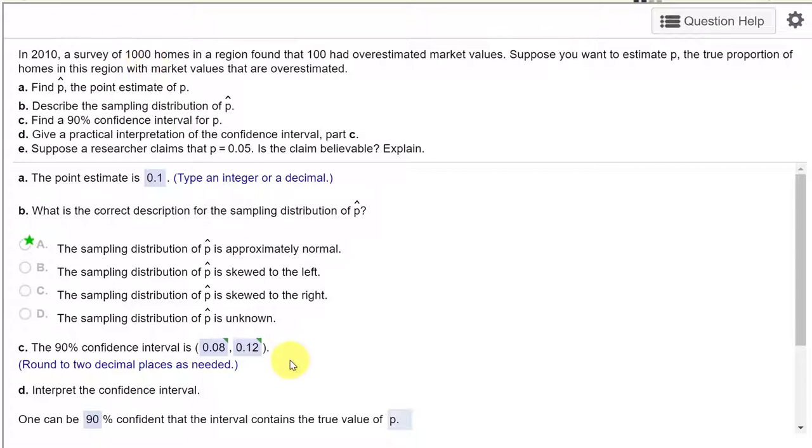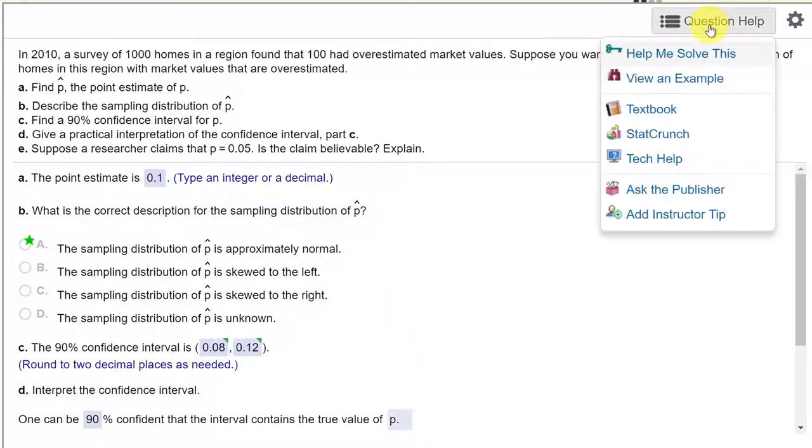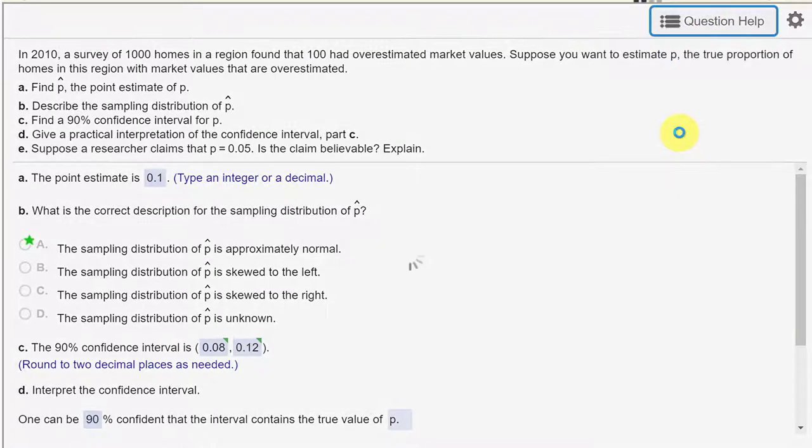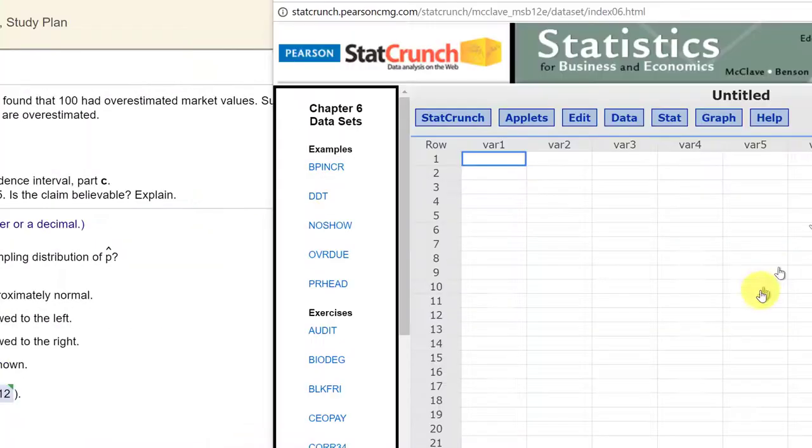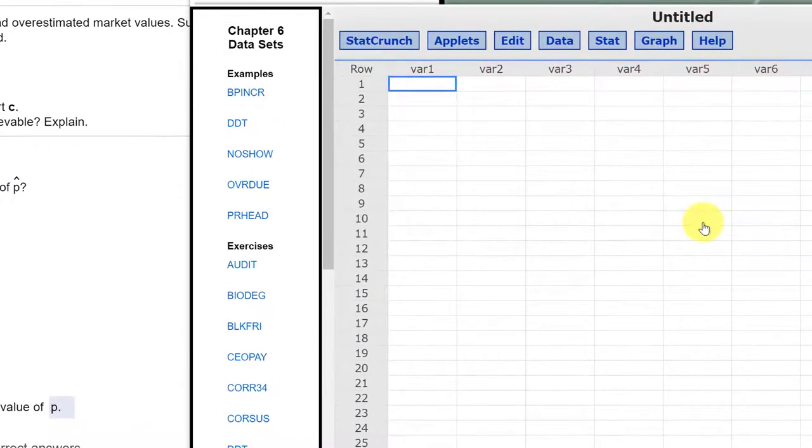We're going to use the Z formula for getting the confidence interval but we're going to do it using StatCrunch. So the first thing we want to do is click over here on question help and then open up StatCrunch. I have StatCrunch open and I move things around a bit.